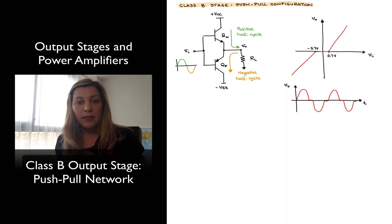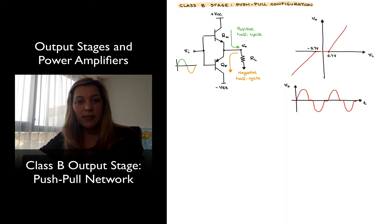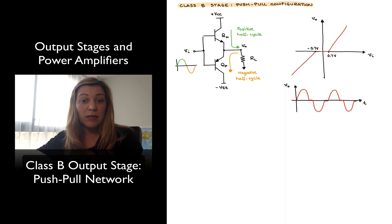Now, if you remember, a characteristic of the Class B output stage configuration, or Class B operation, is that the transistor conducts for only half a cycle. And we can see that that is the case here. Each one of the transistors is going to conduct for half a cycle and be in cut-off or turned off for the other half of the cycle.